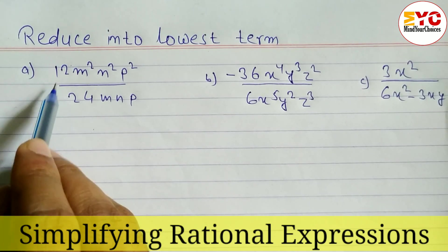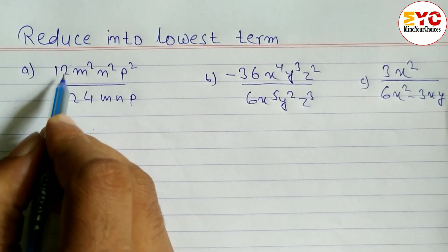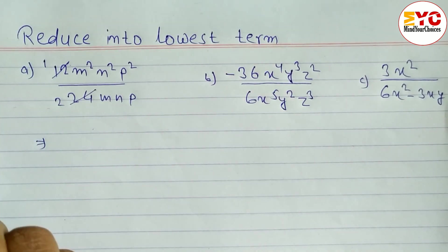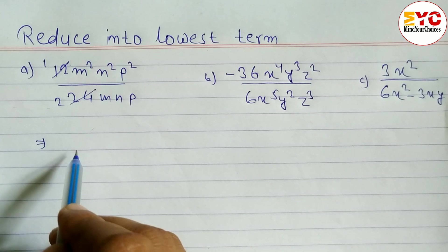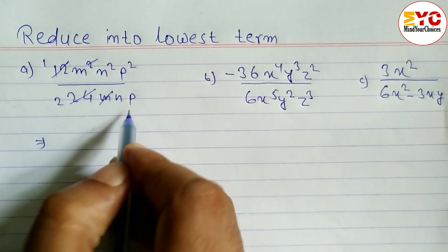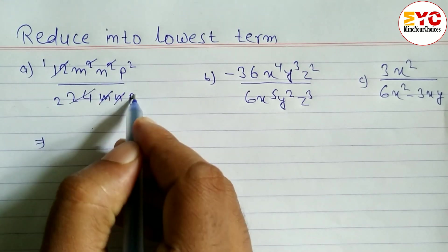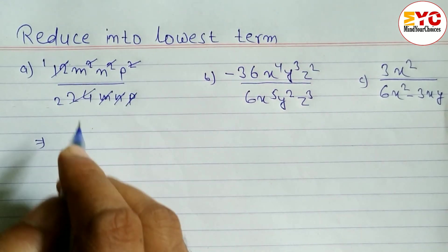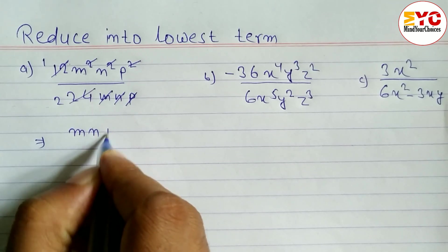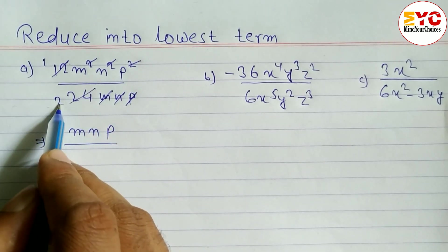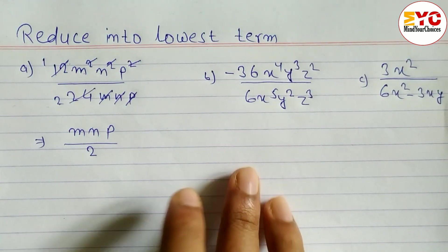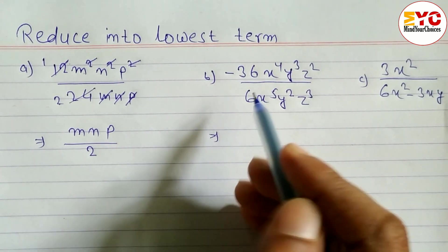Here we have 12 over 24, so we can reduce: 12 ones are 12, and 12 twos are 24. Then mn² cancels with n², so what is remaining is m and p. We can write here m·p over 2, so m·p/2 is the answer.